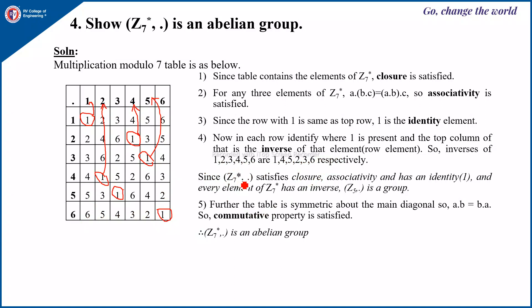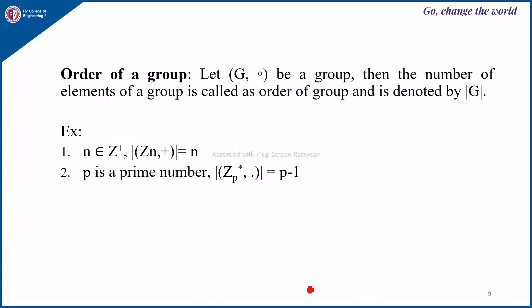Since Z7 star dot satisfies closure, associativity, and has an identity element 1, and every element of Z7 star has an inverse, Z7 star dot is a group. Since the table is symmetric about the main diagonal elements — if you fold along the main diagonal these will match — therefore Z7 star dot is an abelian group.